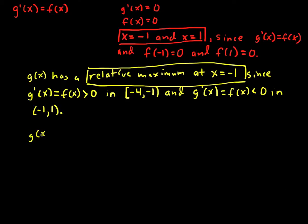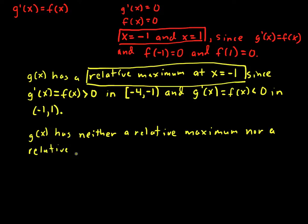So I'd say g of x has - how do I say this? I'll say, I'll use the words I use - neither a relative maximum nor a relative minimum at x equals 1,